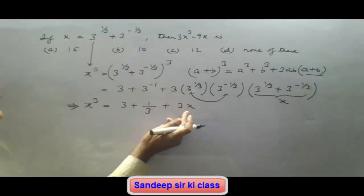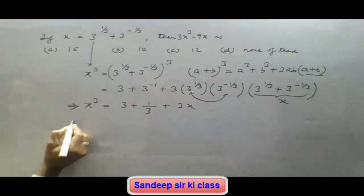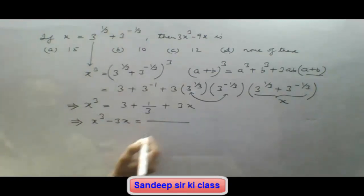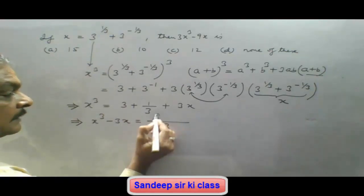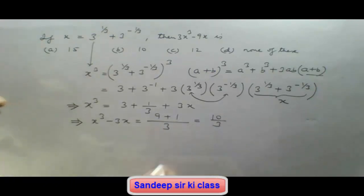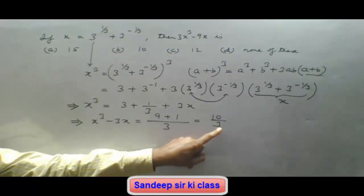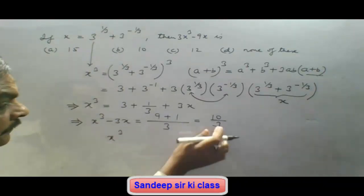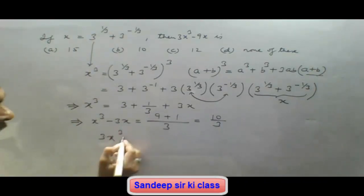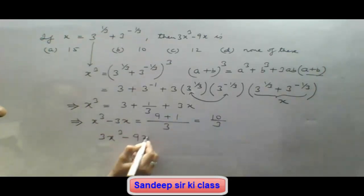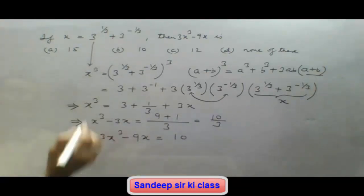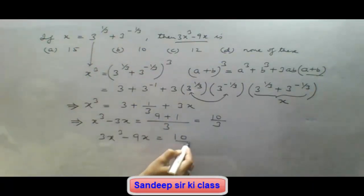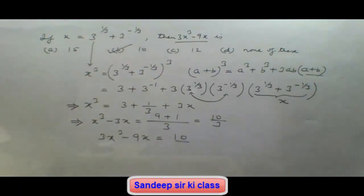We bring 3x to the left-hand side: x³ minus 3x equals 3 plus 1/3. Taking LCM of 3 on the right, we get (9+1)/3 = 10/3. By cross multiplication, multiplying both sides by 3: 3x³ minus 9x equals 10. So option B is the correct answer.